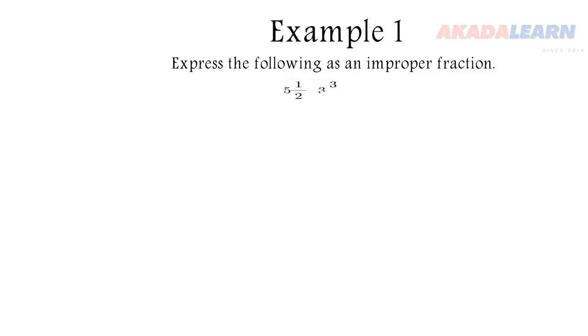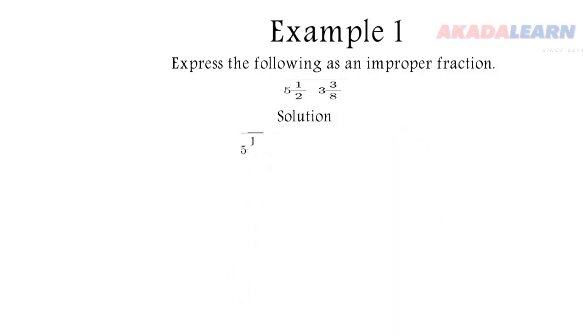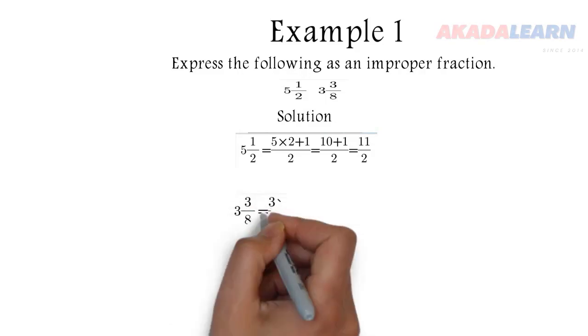How to convert from mixed fraction to improper fraction: we are going to multiply the whole part with the denominator. We will now add the numerator and divide everything by the denominator. Apply your rule of BODMAS. Multiplication comes before addition. Then we arrive at that answer.